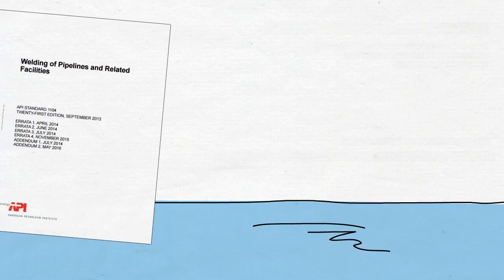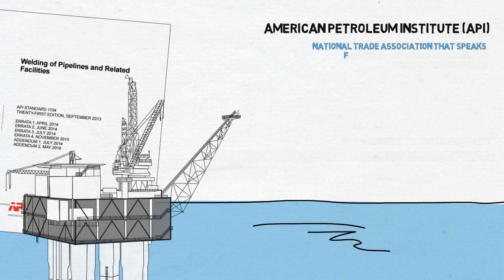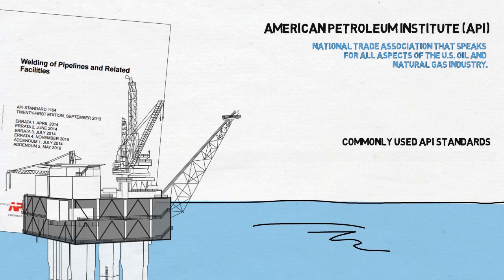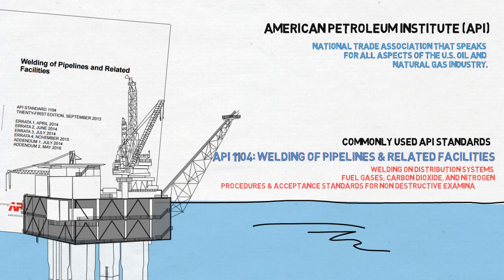The American Petroleum Institute is a national trade association that speaks for all aspects of the U.S. oil and natural gas industries. A common standard by this organization is API 1104, which pertains to the area of compression, pumping, and transmission of crude petroleum, oil, petroleum products, fuel gases, carbon dioxide, and nitrogen, and where applicable covers welding on distribution systems. It also includes procedures and acceptance standards for radiographic, magnetic particle, liquid penetrant, and ultrasonic testing.